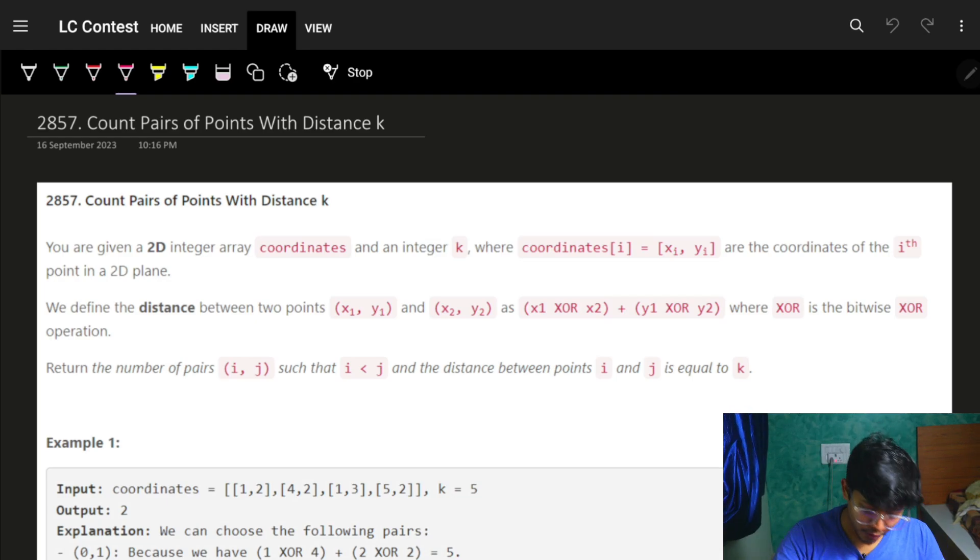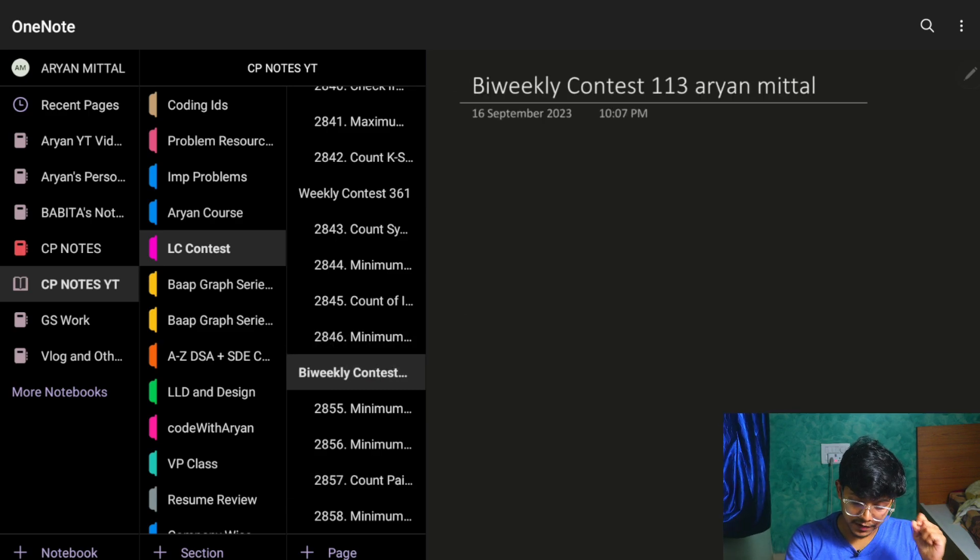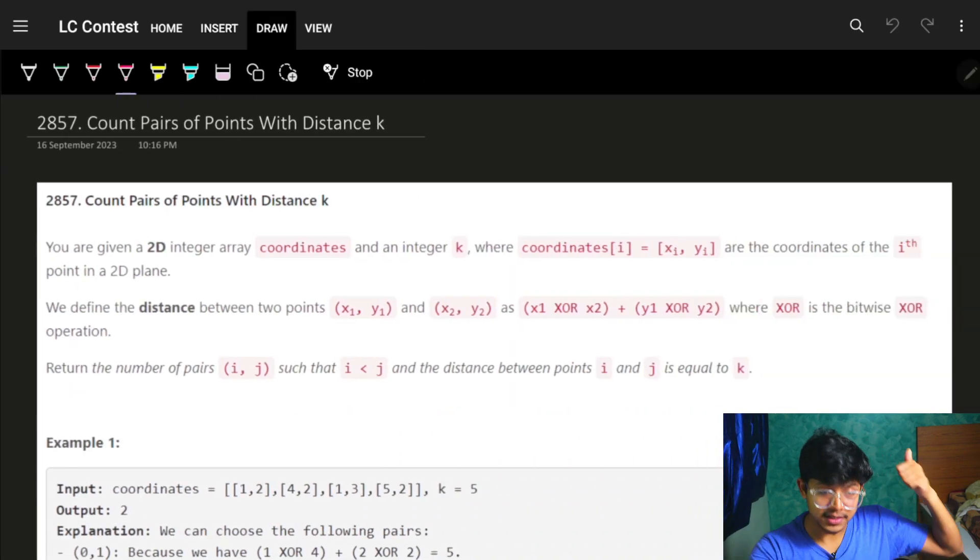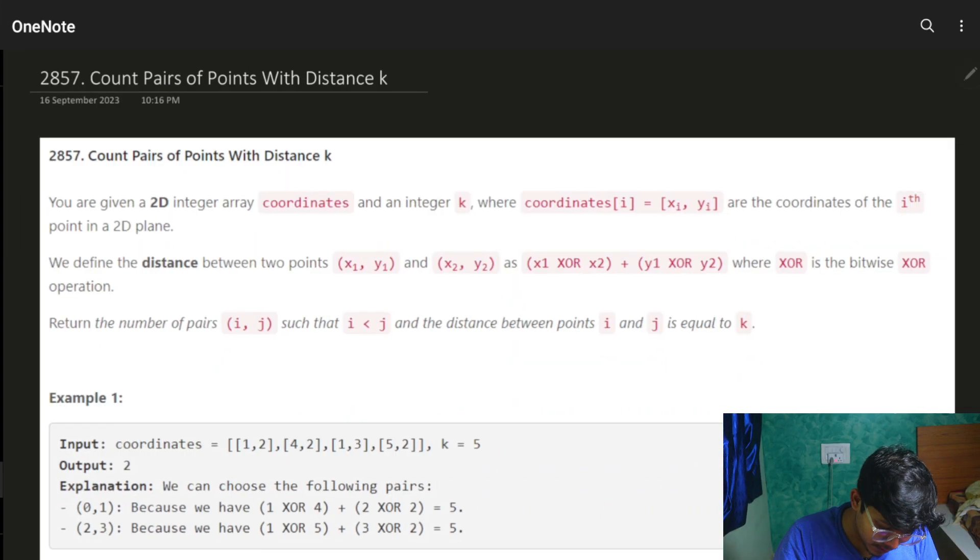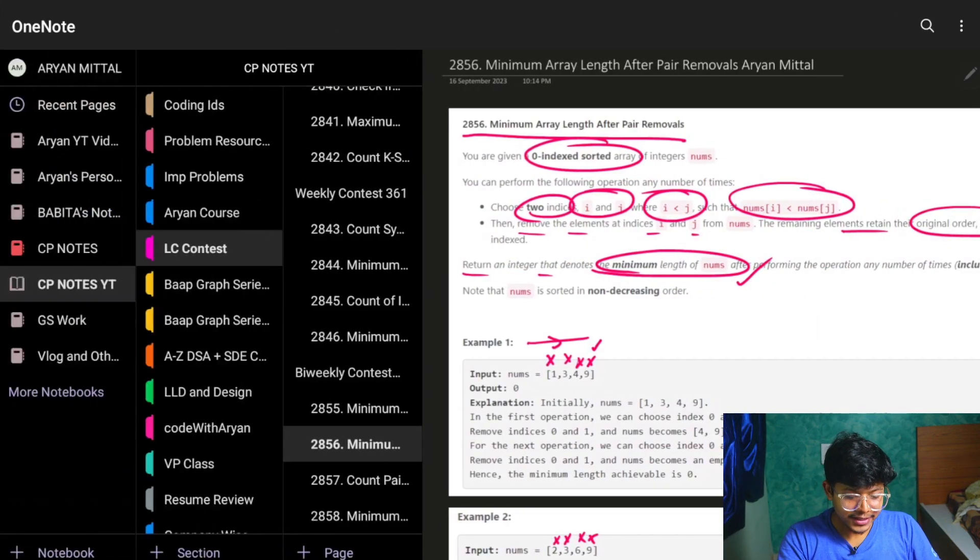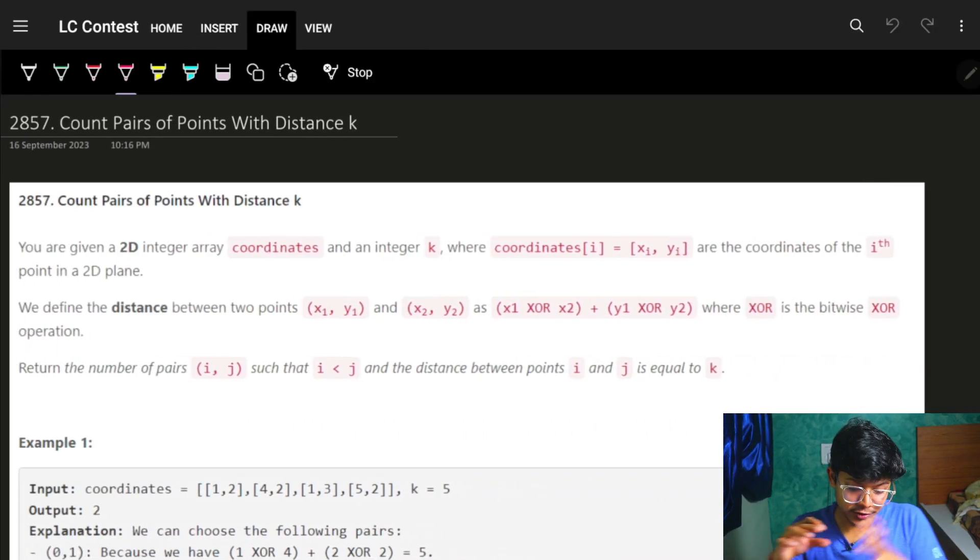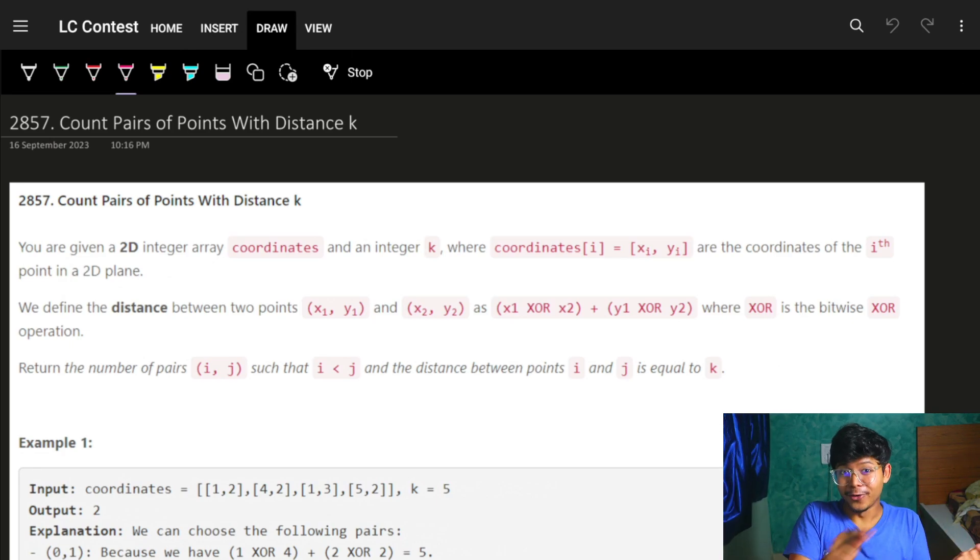Hello everyone, good morning. Welcome back to a new video where we're discussing bi-weekly contest 113, all problems. We already discussed the previous problem, so if you haven't watched it, go check it out. The current problem we're discussing is count pairs of points with distinct distance k.